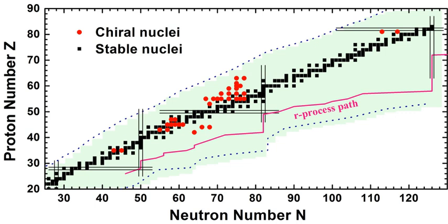Noteworthy is that the R process is responsible for our natural cohort of radioactive elements, such as uranium and thorium, as well as the most neutron-rich isotopes of each heavy element.